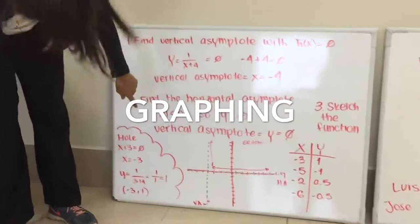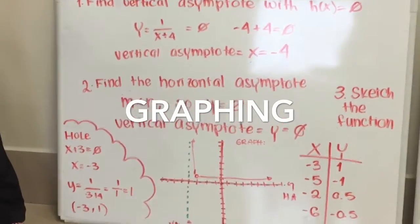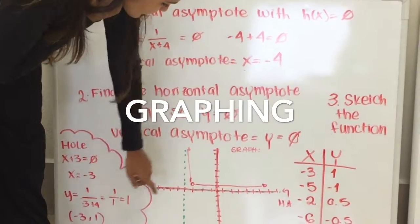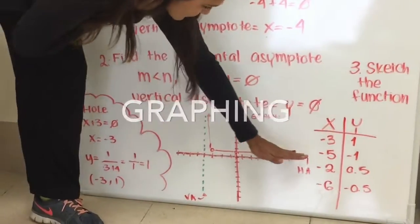First you have to graph the hole, which is negative 3 comma 1. Then you have to graph the vertical asymptote, which is negative 4. Then the horizontal one, which is going to be 0.